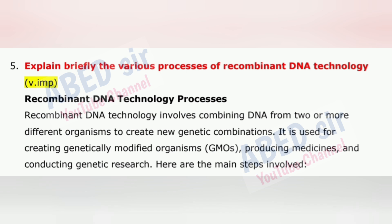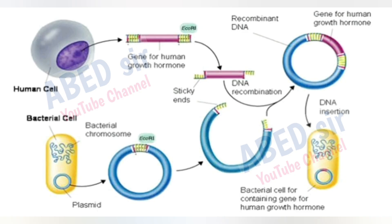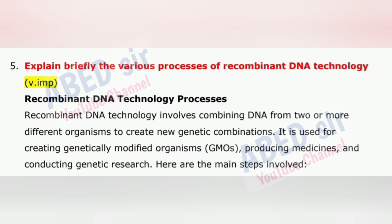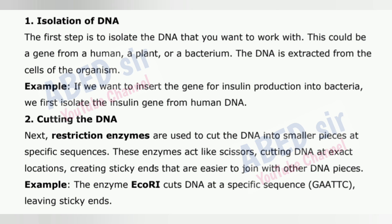Next important question is 5: Explain briefly the various processes of recombinant DNA technology. Recombinant DNA technology involves combining DNA from two or more different organisms to create new genetic combinations. It is used for creating genetically modified organisms (GMOs), producing medicines, and conducting genetic research. Here are the main steps involved. The DNA of interest – this could be a gene from a human, a plant, or a bacterium – is extracted from the cells of the organism. For example, if we want to insert the gene for insulin production into bacteria, we first isolate the insulin gene from human DNA.